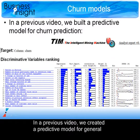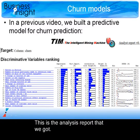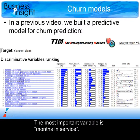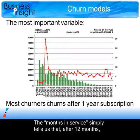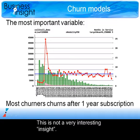In a previous video, we created a predictive model for general churn as opposed to commercial or financial churn. This is the analysis report that we got. The most important variable is months in service. The months in service simply tells us that, after 12 months, once the annual subscription is finished, the customer decides to churn. This is not a very interesting insight.